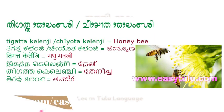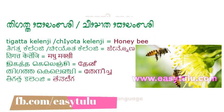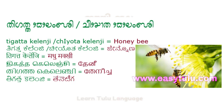Tigata Kelenji or Chiyota Kelenji means Honeybee.